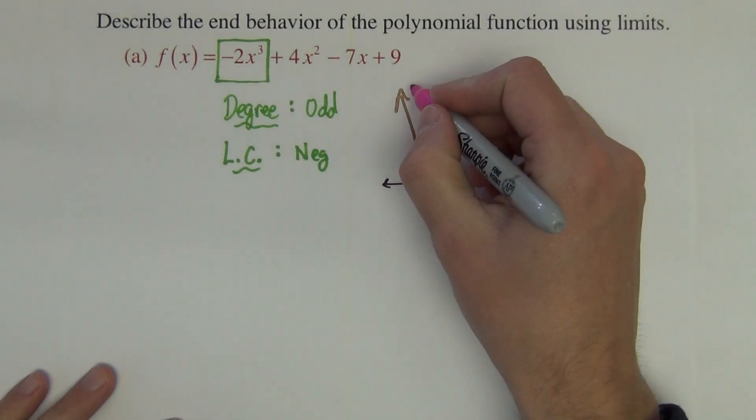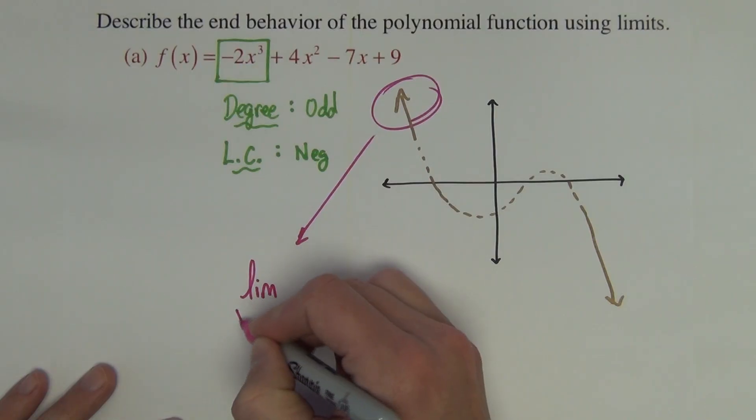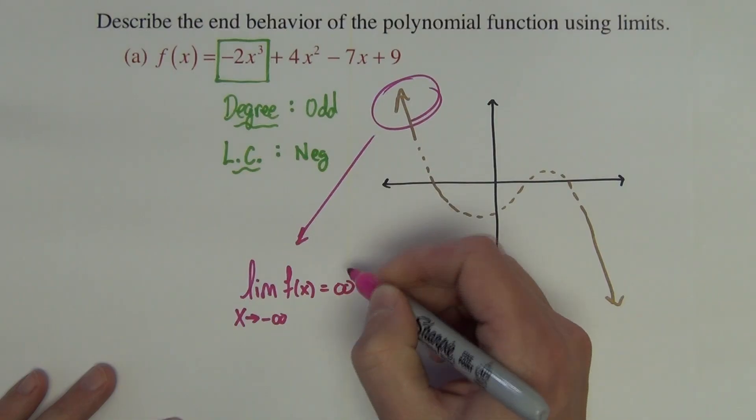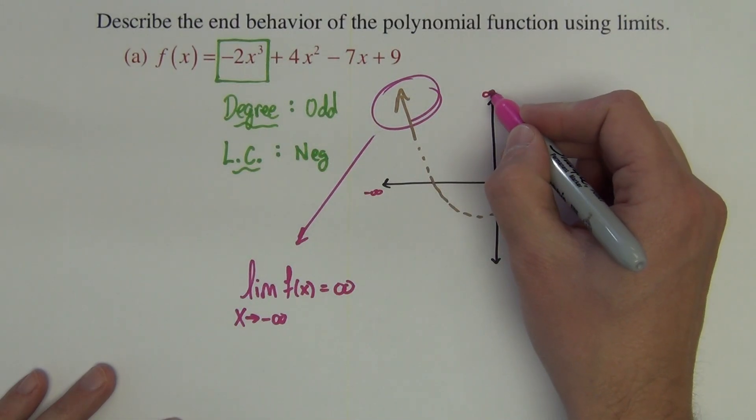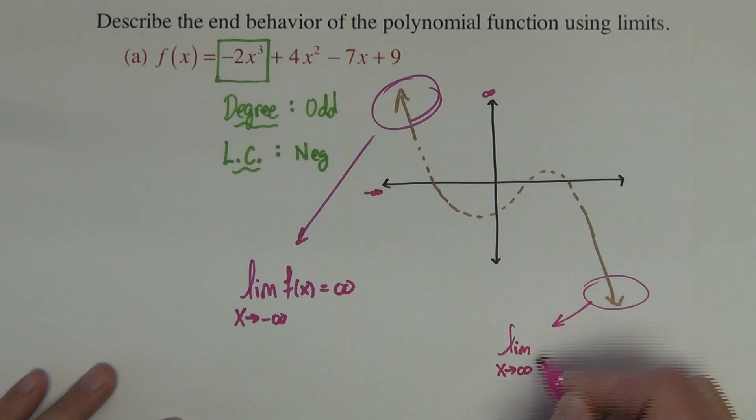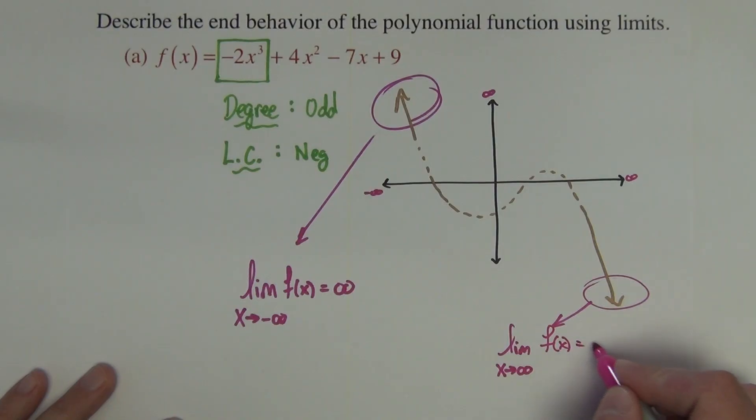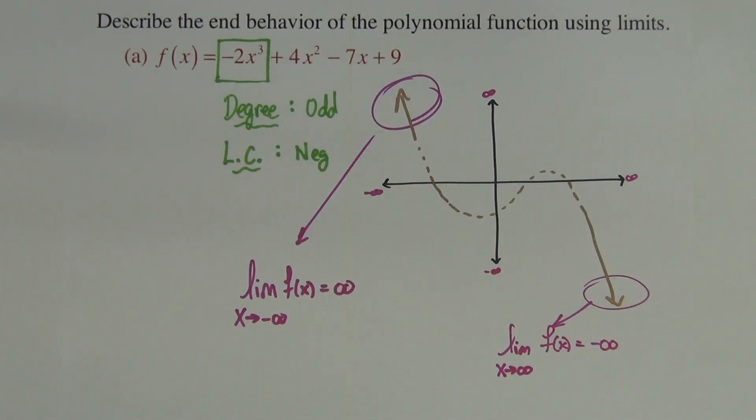Now, describing this using limits, this end behavior, I would say the limit as x approaches negative infinity of f(x) equals infinity. So that's saying as I'm going to the left, function is going up. And this end behavior is the limit as x approaches positive infinity of f(x) equals negative infinity as it's coming down. So there's our two limit statements that we want for this function's end behavior.